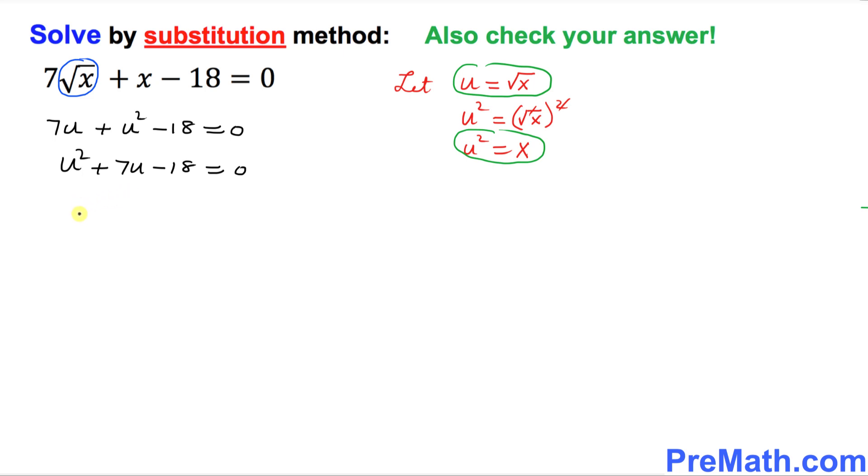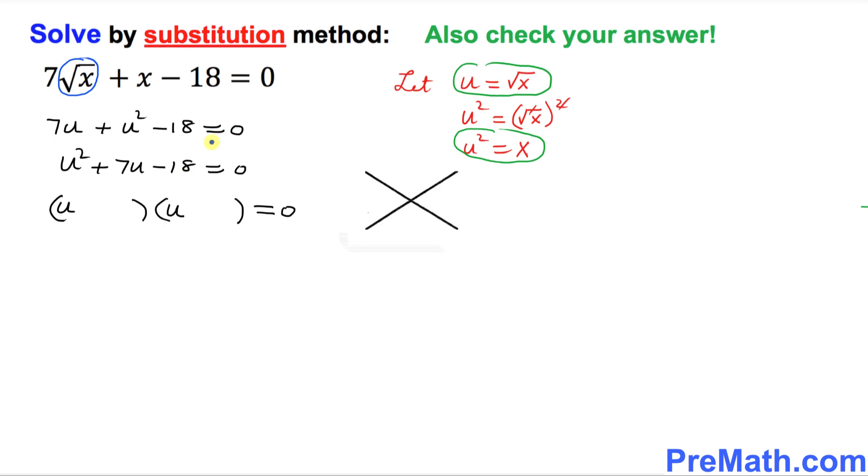So we're going to factor it out really easily. Let's factor this one out. Just put down two parentheses equal to 0. I want you to just put down u over here and u over here. And next thing is, I want you to put this negative 18 on the right hand side on the top of this x factor and this positive 7 at the bottom over here.